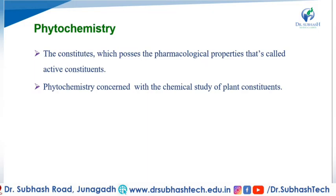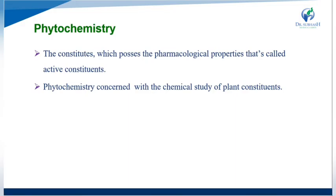So what is phytochemistry? The constituents which possess pharmacological properties are called active constituents. The constituents concerned with the chemical study of plant constituents — that is called phytochemistry. Another definition: the active constituents and their chemical study of plant constituents is called phytochemistry.